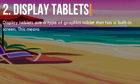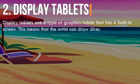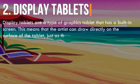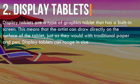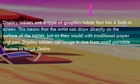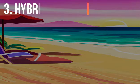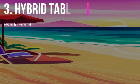2. Display tablets: Display tablets are a type of graphics tablet that has a built-in screen. This means that the artist can draw directly on the surface of the tablet, just as they would with traditional paper and pen. Display tablets can range in size from small portable devices to large desktop displays.